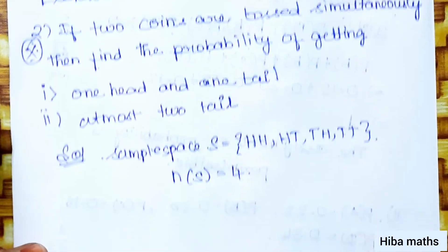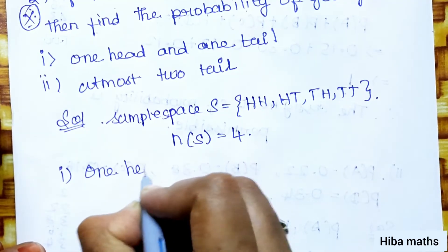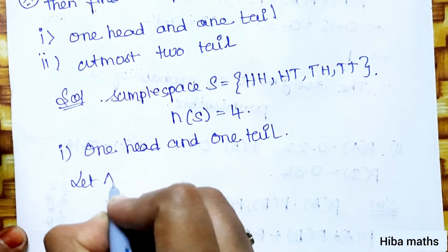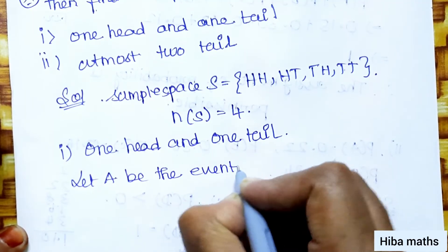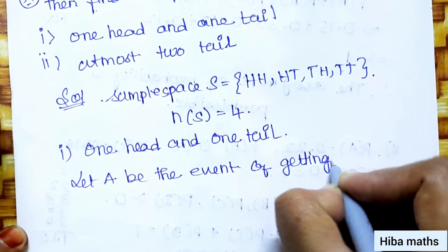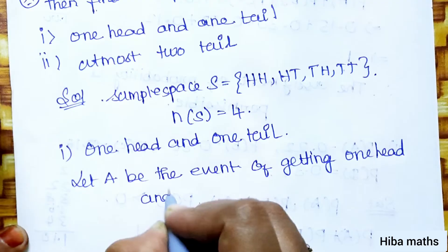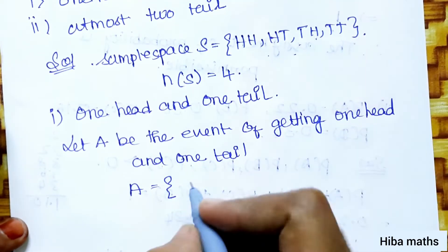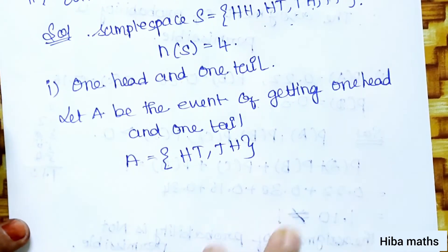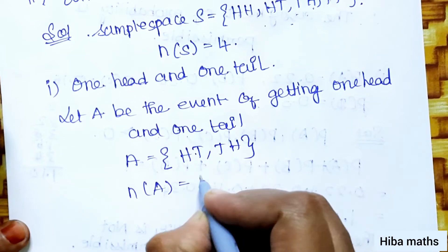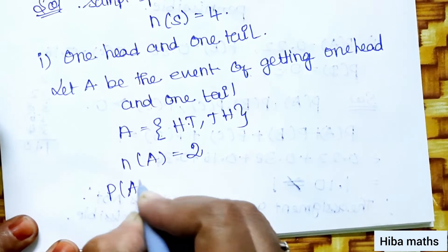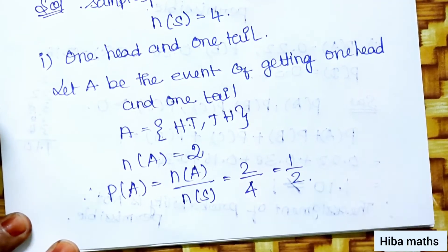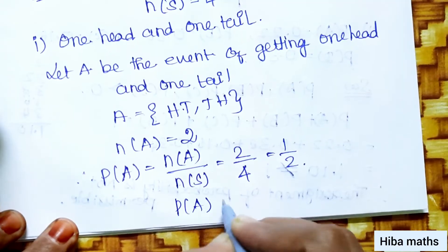First subdivision: one head and one tail. Let A be the event of getting one head and one tail. The possible outcomes are HT and TH, so n(A) equals 2. Now P(A) is equal to n(A) divided by n(S), that is 2 by 4, which simplifies to 1 by 2. So P(A) equals one by two.